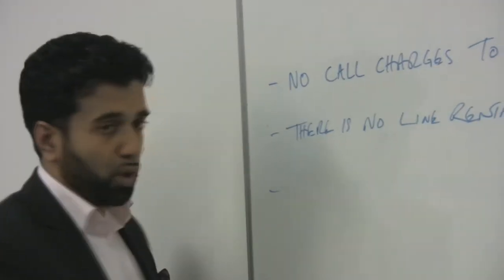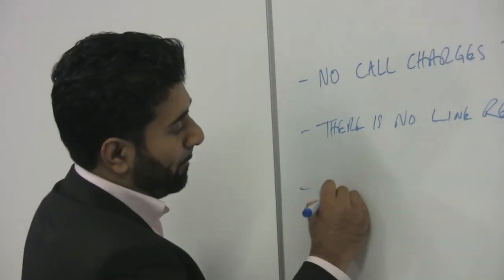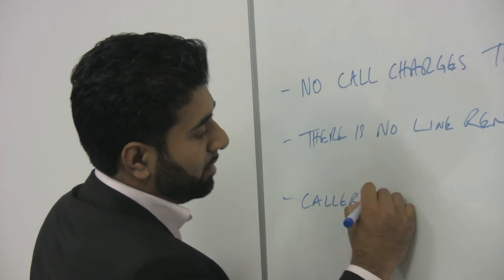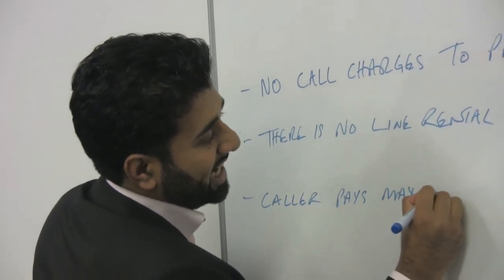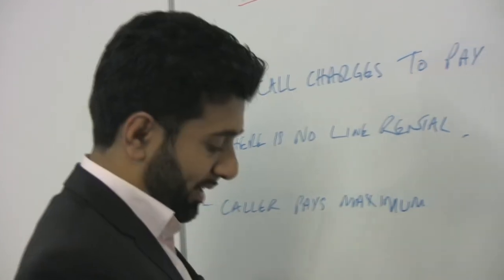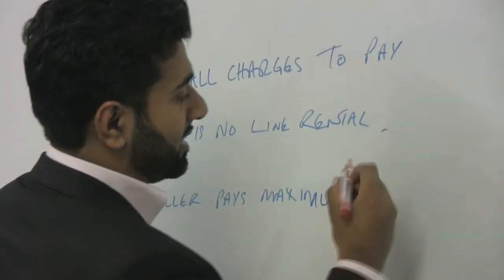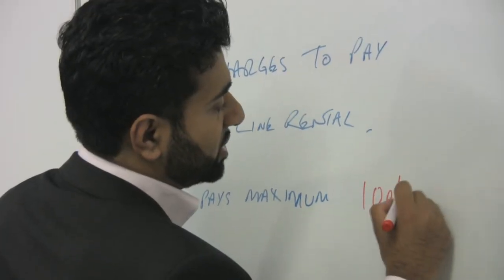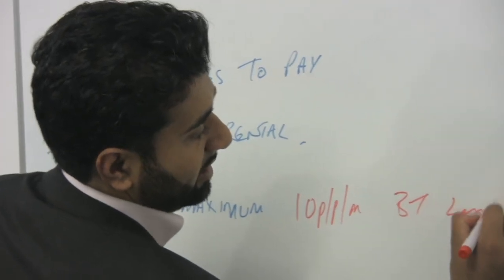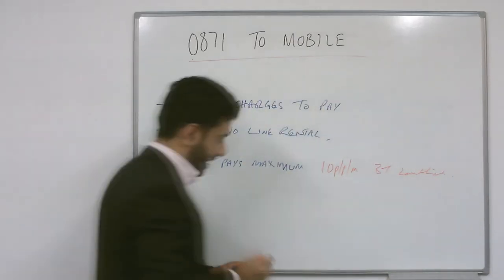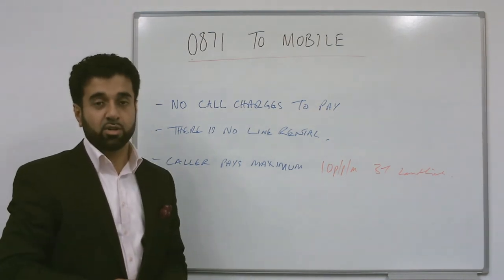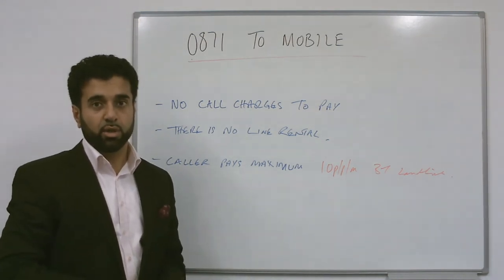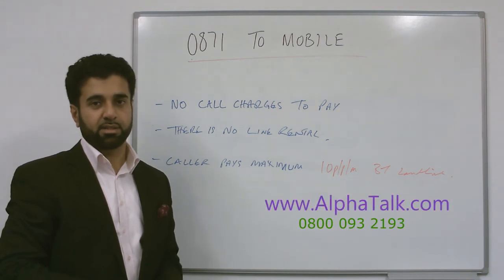And most importantly, the caller pays a maximum of ten pence a minute for each time to dial that number. That's a standard charge from a BT landline. Ten pence a minute. It's as simple as that. There's no other cost to you to take up this service.